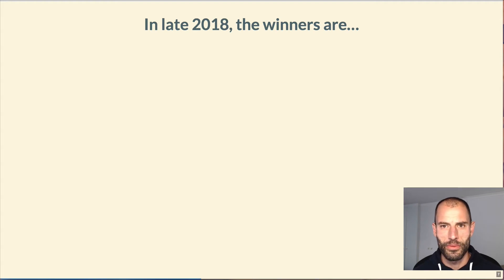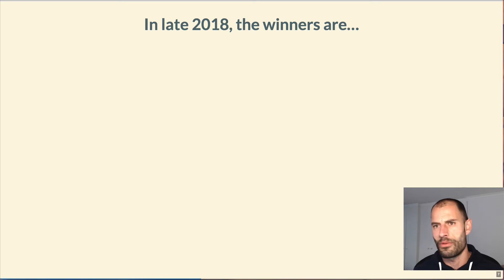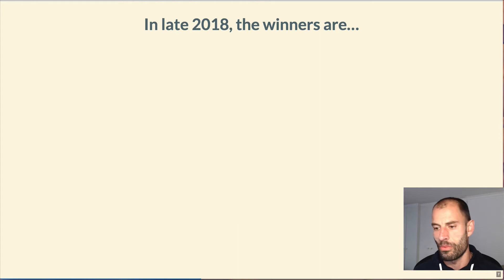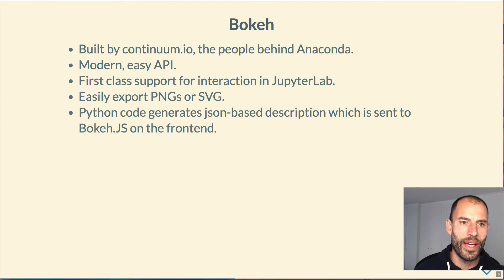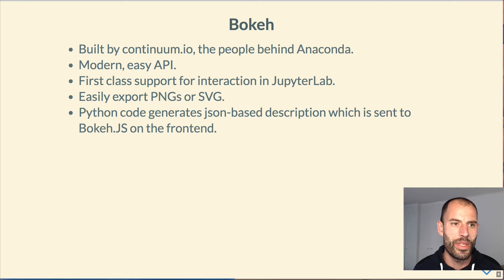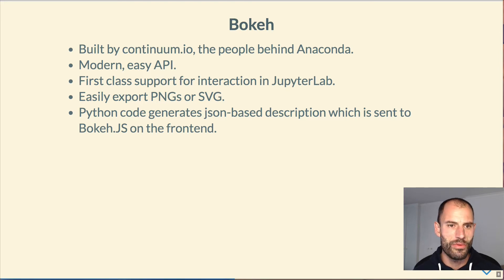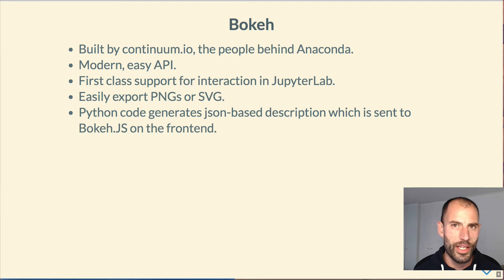So let's get to the actual meat of this lecture. The two libraries which I think are currently the best choices in the data science Jupyter context — Bokeh is the first candidate I'd like to focus on. That's a Python library designed by Continuum.io, the same people behind the whole Anaconda ecosystem. It is a modern, easy API, loosely based on the grammar of graphics, which is quite an important thing in the visualization world. It has first-class support for interaction in Jupyter Notebooks and JupyterLab, and it can export either bitmaps or SVG vector graphics, which are really nice for high-quality presentation graphics.